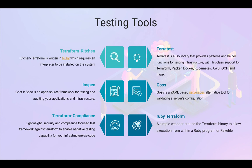Goss is a YAML-based tool that's pretty easy to use for validating your server configuration. Terraform Compliance is a lightweight tool — if you've used Cucumber or feature files, it's pretty much like that. You don't have to write any code or configuration; all you need to do is write feature files in plain English, such as 'I need my virtual machine to be hosted in this region.' We'll show you that in upcoming videos as well. Ruby-Terraform is a simple wrapper around the Terraform binary to allow execution from within a Ruby program or file.